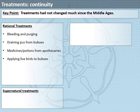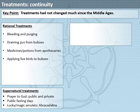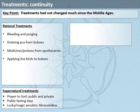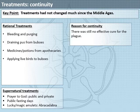Again, some supernatural treatments, and again these should be familiar. So prayer to God, both public and private, public fasting days organised by the authorities, and also the wearing of lucky charms, often with the words 'abracadabra' on them. The reason for this continuity is that there was still no effective cure for the plague, and the treatments reflected the continuity in explanations.